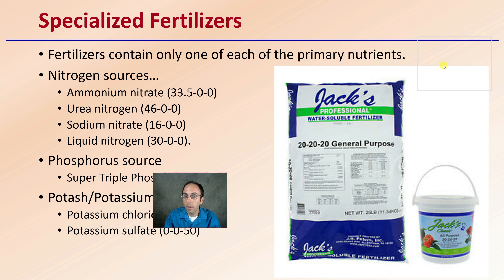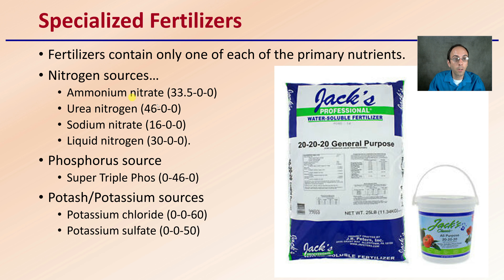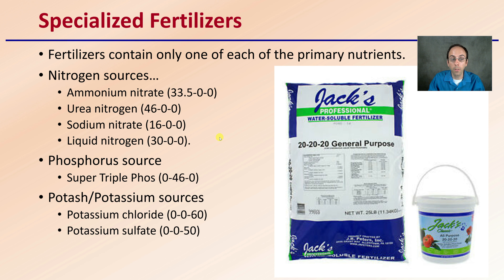Fertilizers can contain only one of three primary nutrients. For nitrogen sources, we have ammonium nitrate, which is 35.5% nitrogen with no phosphorus or potassium, as well as urea, sodium nitrate, or liquid nitrogen. All of these heavily favor nitrogen with no phosphorus or potassium, which in certain cases might be beneficial.